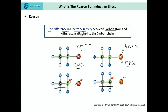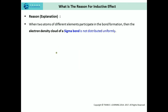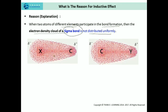In the case of an electron withdrawing group, there is a partial positive permanent polarity on the carbon chain, whereas with an electron releasing group, there is a partial negative permanent polarity on the carbon chain. The basic reason for this is that when two atoms of different elements participate in bond formation, the electron density cloud of the sigma bond is not distributed uniformly.